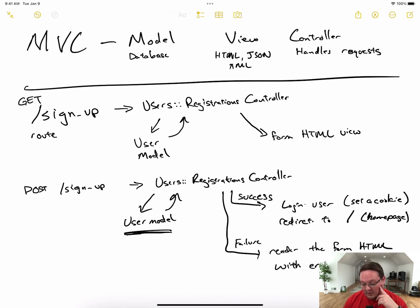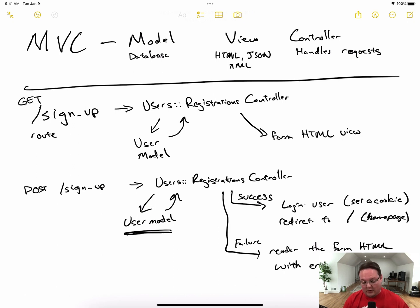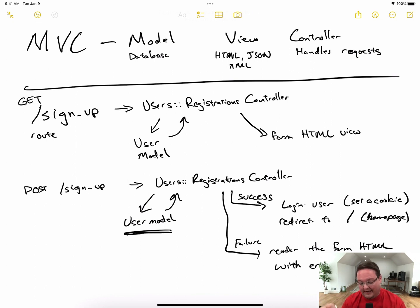That is basically MVC in a nutshell — these three components help you decide where your code goes. If you need to require passwords of 12 characters or more, where would that code go? It would go in the model, because that's where we pre-process database records before they get saved. The database isn't smart enough to enforce that rule, so we write it in Ruby in our model to verify the password length and then save it in hashed format.